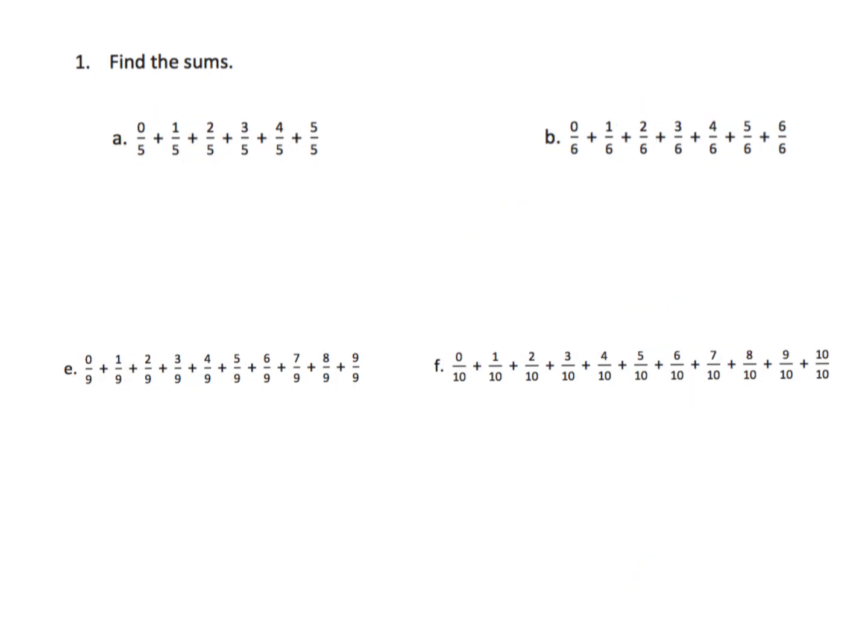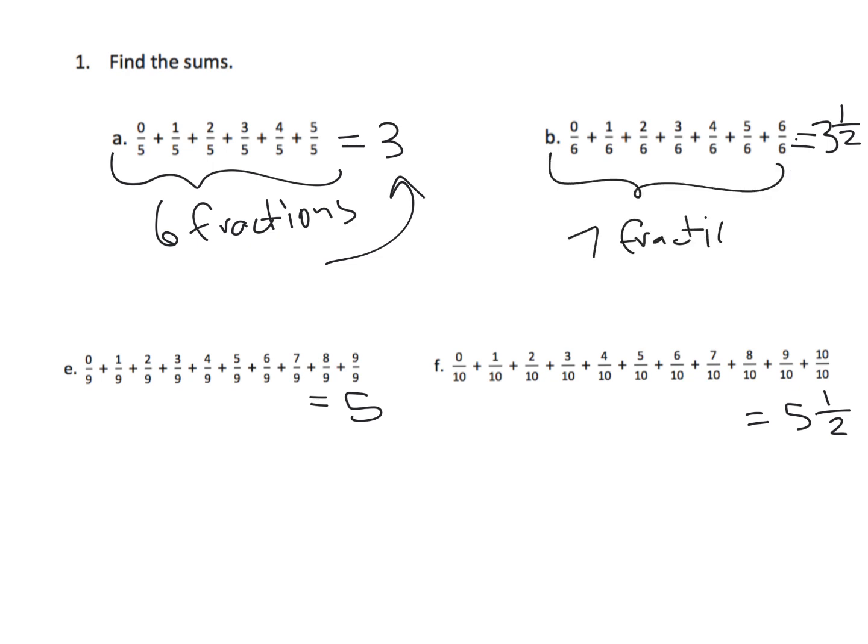So, let's think about this. This answer was three. This answer was three and a half. This answer was five, and this answer was five and a half. So, when there were six fractions, the answer was three. When there were seven fractions, the answer was three and a half. When there were ten fractions, the answer is five. And when there's eleven fractions, the answer is five and a half.